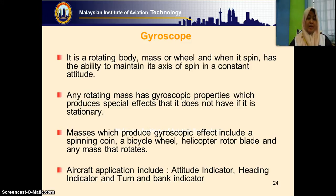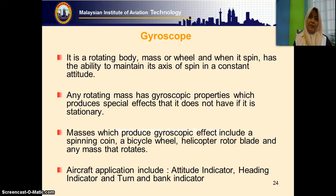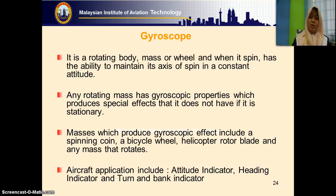We also have the heading indicator. Inside this indicator we also have a gyro. The heading indicator provides aircraft heading — it means the aircraft nose pointing to a certain direction. The turn and bank indicator provides aircraft turn. When an aircraft turns, it's not like a car; the aircraft must bank a little bit. This indicator provides turn and also the condition of the bank — whether the aircraft is turning with proper bank, or in a skid or slip condition.